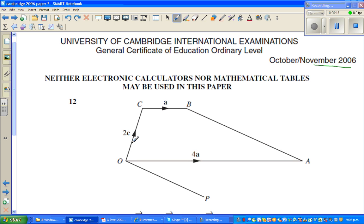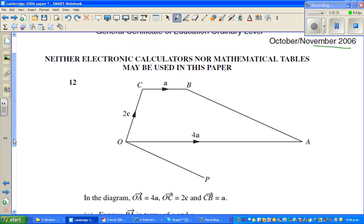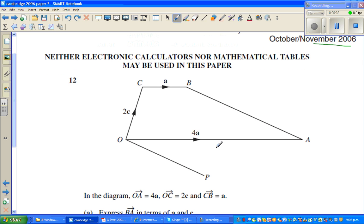So this is OC, we are giving this 2c. CB is 2a, and these two are parallel. So this vector is 4 times this vector. So the question is they have given OA is 4a.